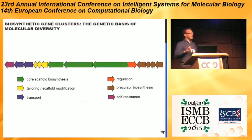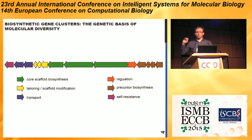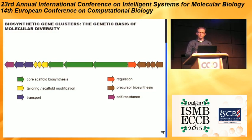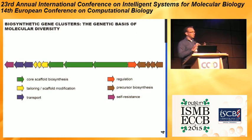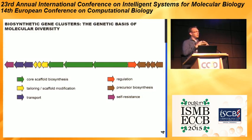The intriguing thing is that there is clearly a genetic basis to this large molecular diversity. All these molecules, which include a lot of molecules that we can use in daily life — like antibiotics, chemotherapeutics, and immunosuppressants — a lot of clinically relevant drugs as well. All this chemical variation is encoded in distinct units on the bacterial and fungal chromosomes, and these are biosynthetic gene clusters. All the genes encoding the functions to make a molecule, transport it out of the cell, and regulate that entire procedure are grouped together, physically clustered into a region on the chromosome.